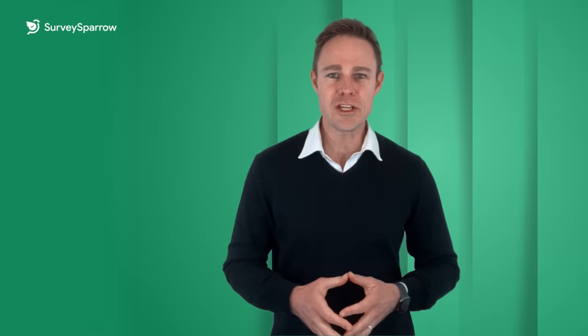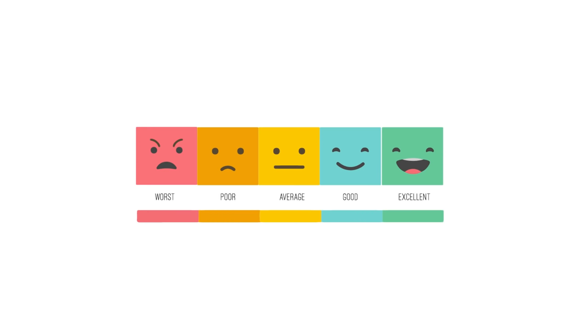What is a Likert scale survey question? It's a question that uses a five or seven point scale, sometimes referred to as a satisfaction scale, that ranges from one extreme attitude to another. Typically, the Likert survey question includes a moderate or neutral option in its scale.